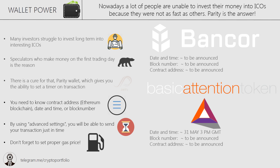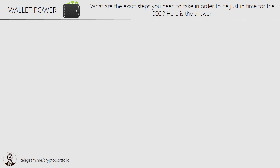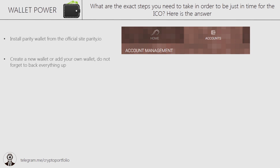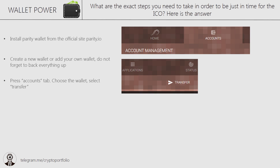Your computer has to be online during the sale. Here is more concrete information on how to do it: install the official Parity Ethereum browser from parity.io, then create a new wallet or use your own key file to load an existing wallet. Back up all your keys so you will not lose them — remember, if you lose your keys you lose all your money and tokens. Press the accounts tab, choose your wallet from which you will send your funds, and click Transfer.